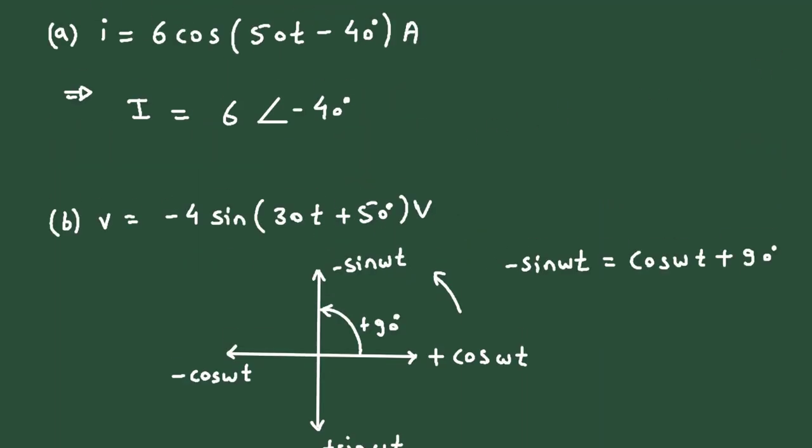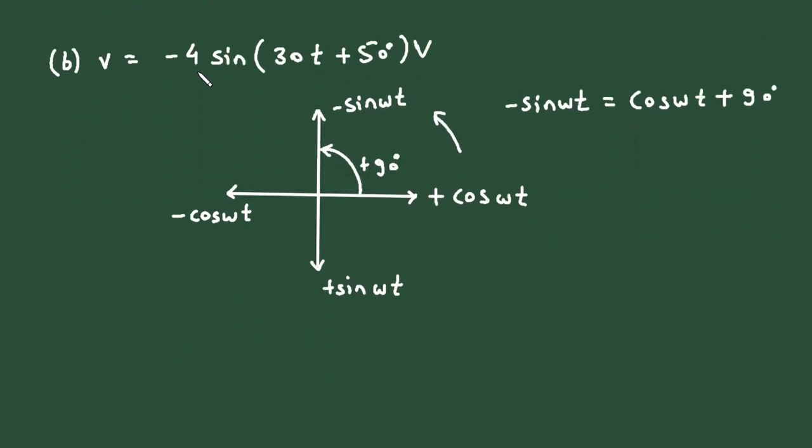So here for this question, it is minus 4 sine. So this will be, small v is equal to, this is the solution for this question. So it will be 4 cos(30t + 50°).